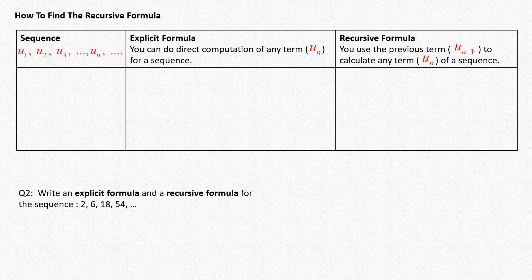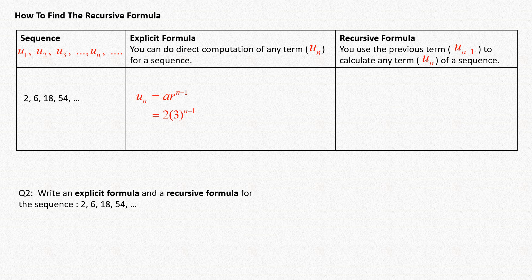Now, what if you have a sequence that follows a geometric progression? Since a is 2 and r is 3, you can write out the explicit formula for the sequence. For the recursive formula, if you look at the sequence: